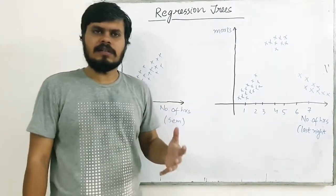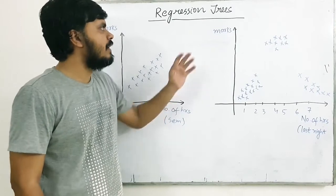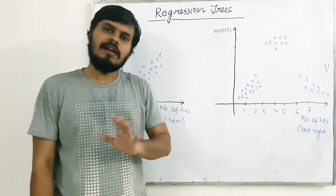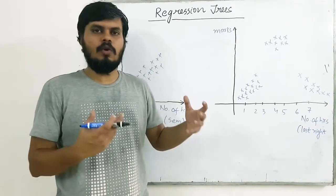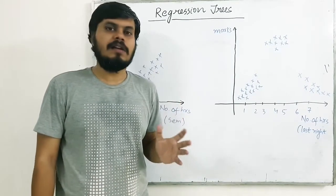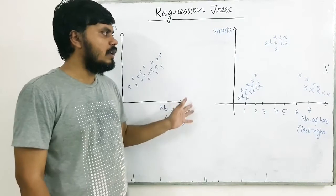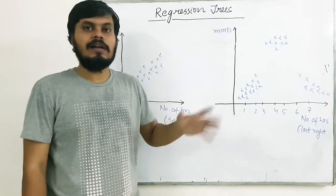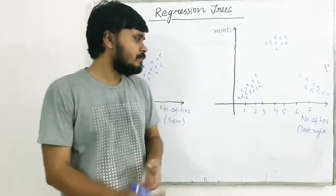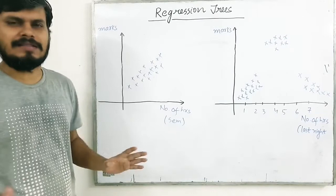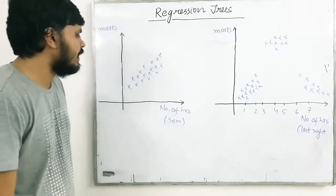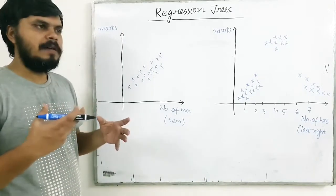So we'll first discuss in this video where regression trees are applicable, because to be honest, most problems linear regression solves. It's like the go-to algorithm in regression. But I'll show you where linear regression cannot be used and where regression trees can help.